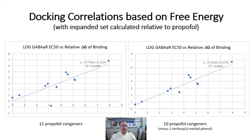Plotting the results of the log of the EC50 for GABA potentiation versus the relative ΔG of binding — with all ΔGs calculated relative to that of propofol — one can readily see a reasonable log-linear correlation for 11 propofol congeners with one outlier. With the one outlier removed, the remaining 10 propofol congeners show an even better correlation.